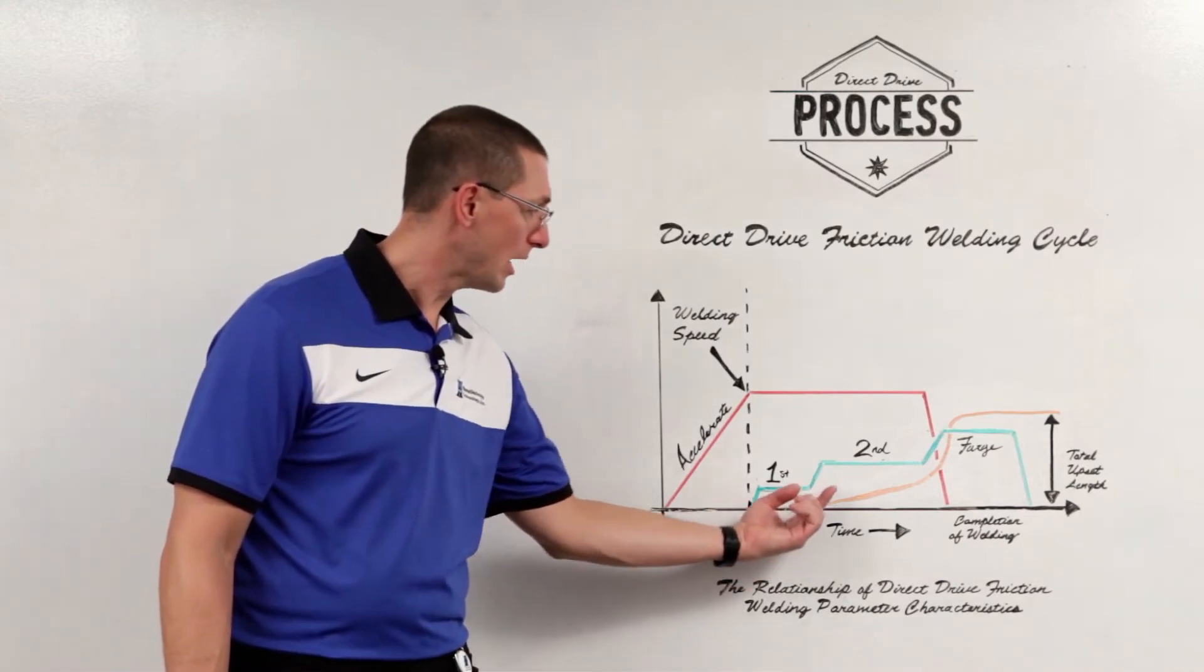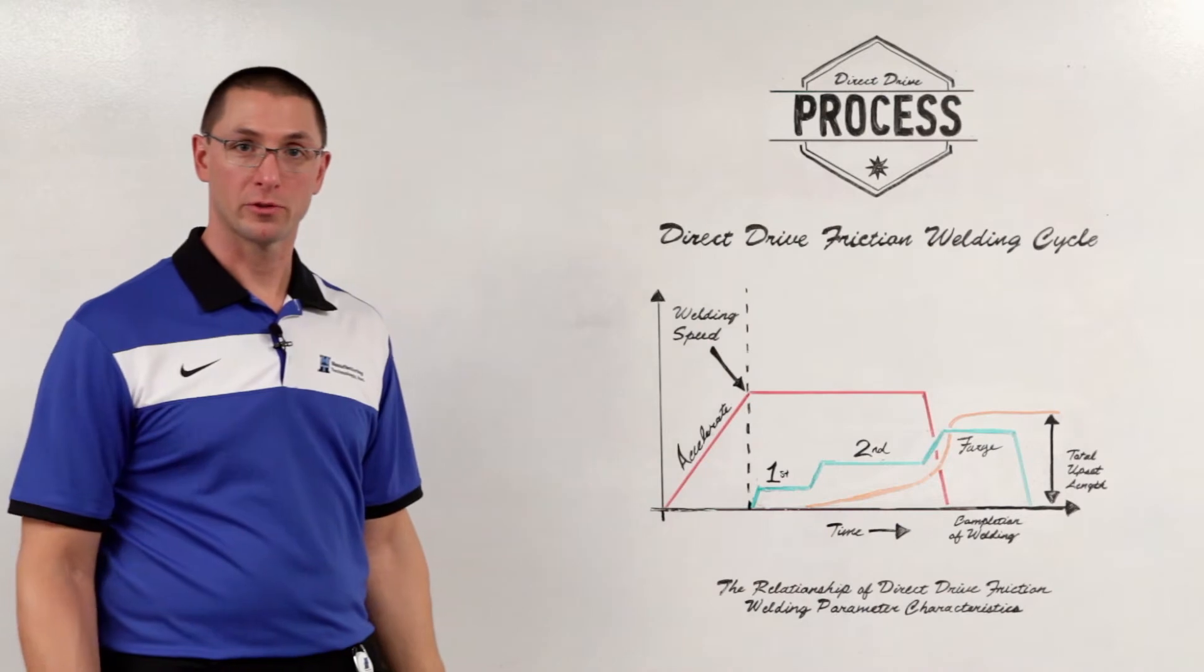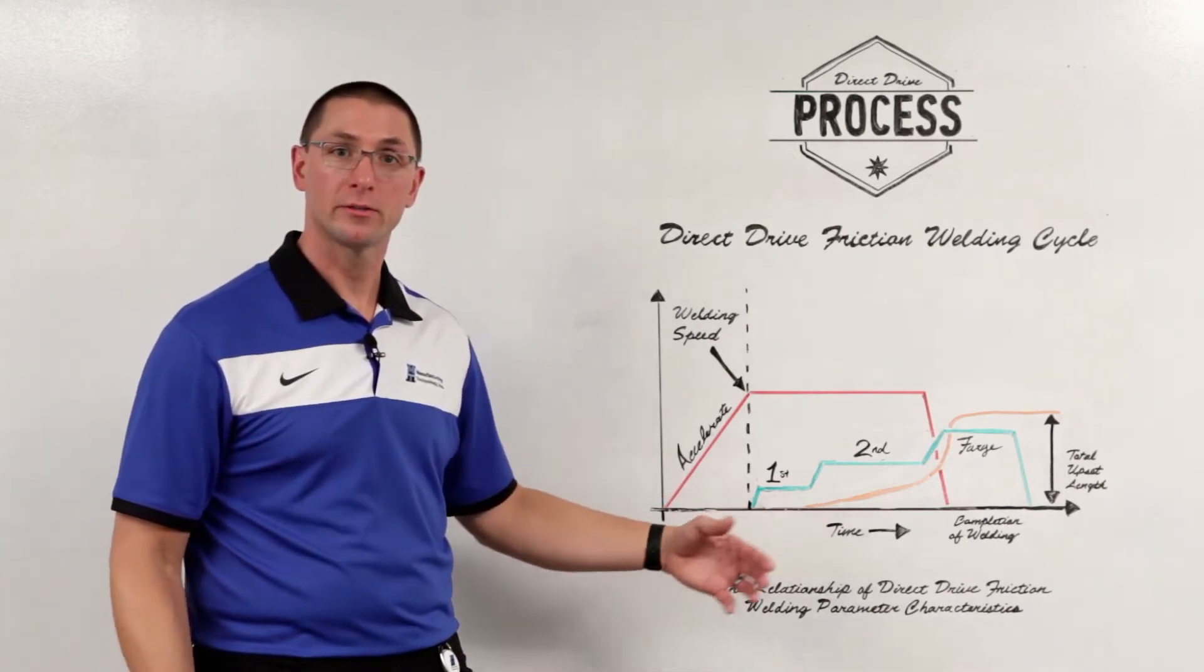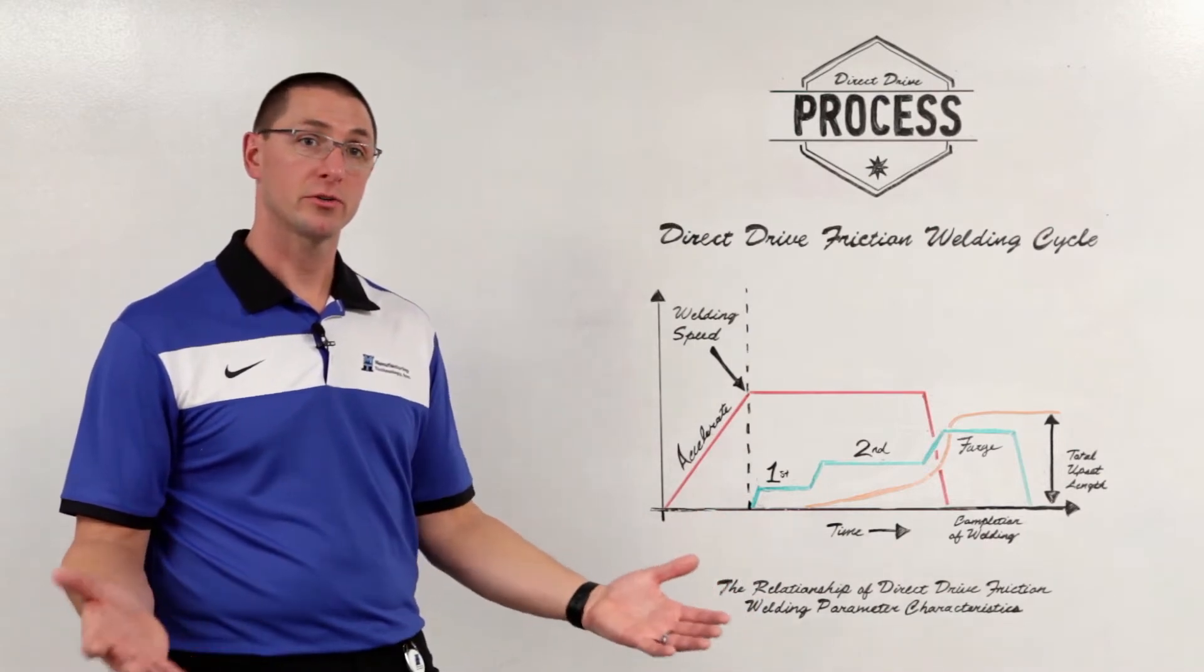After a certain amount of time we bring on a second friction force which is a little bit higher. This is enough to generate heat at the weld interface to soften the material and start creating some upset.